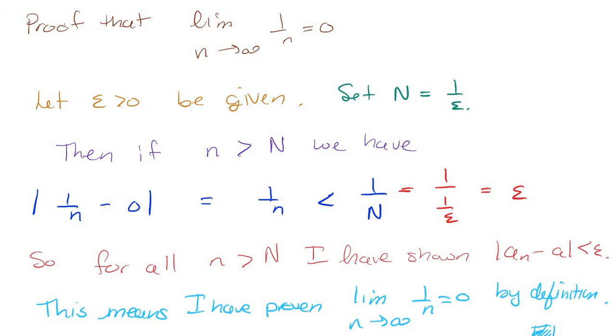So we just know it's bigger than zero because... Because in the sequence definition, N starts at 1. So if you list them out as a sequence, 1, 1 half, 1 third, they're all bigger than zero. That's why. Any other questions?